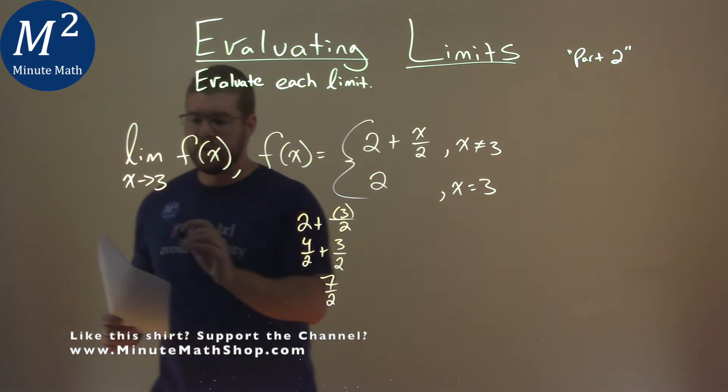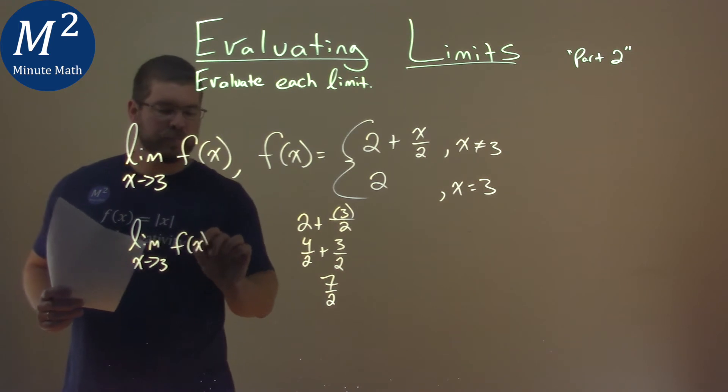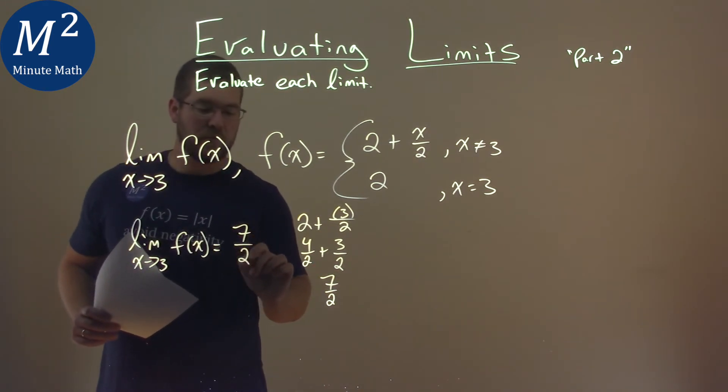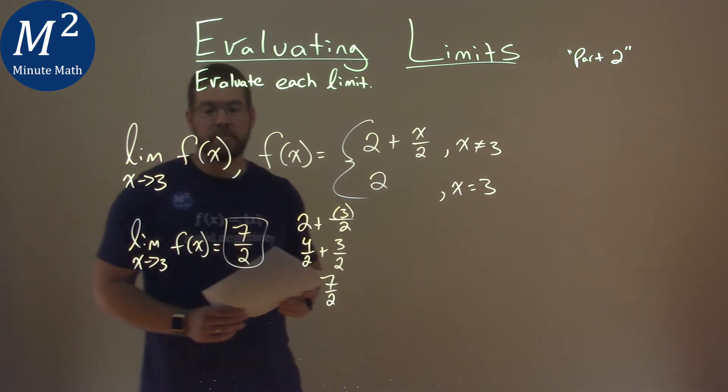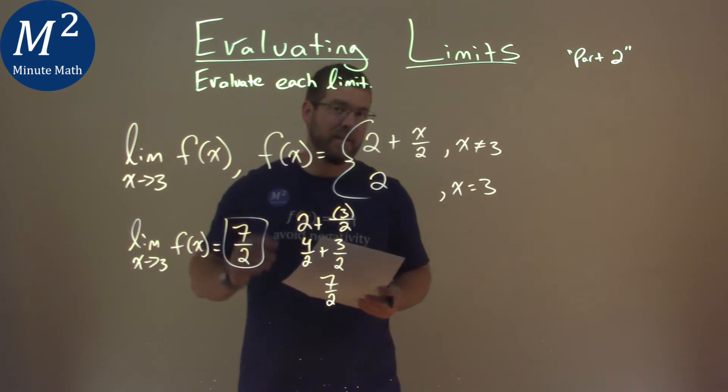So, again, we need to find this limit as x approaches 3 of f of x. Let's relabel it, and it's equal to, again, 7 halves. That's where it's approaching, not what it's equal to. So, our limit here is equal to 7 halves, and that's our final answer.